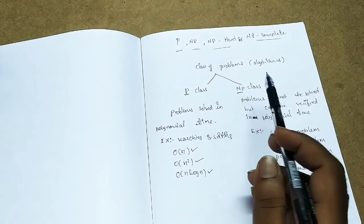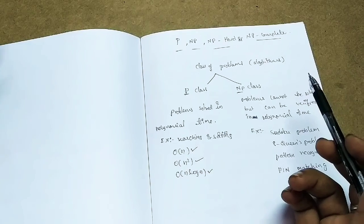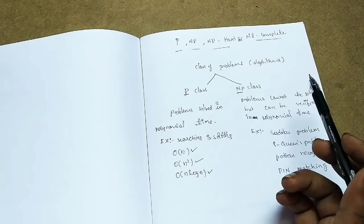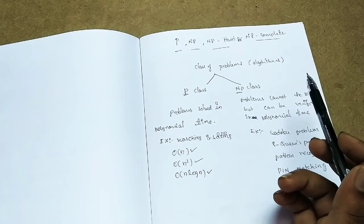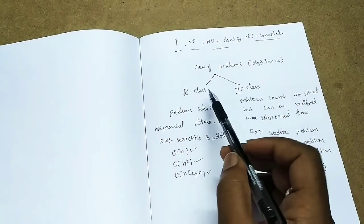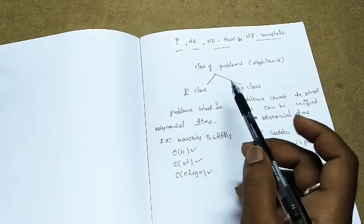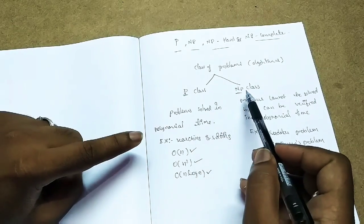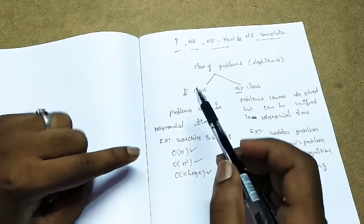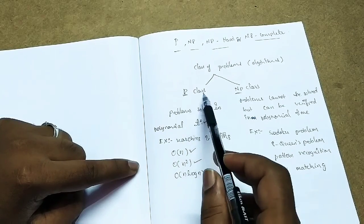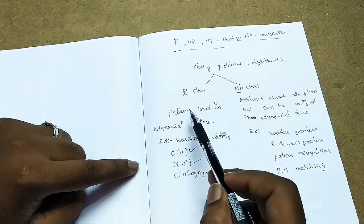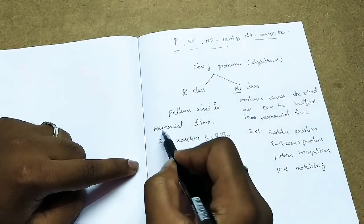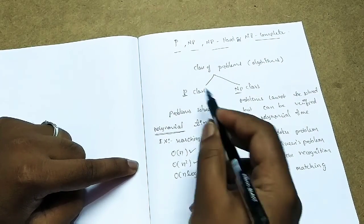The class of problems can be divided into two types: one is P class and the other is NP class. P class is the set of all problems which can be solved in polynomial time.